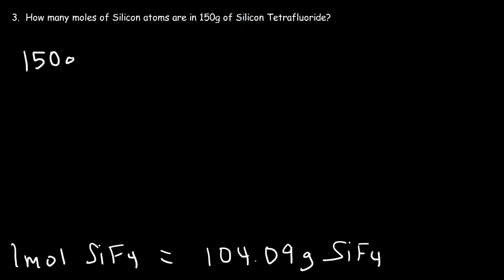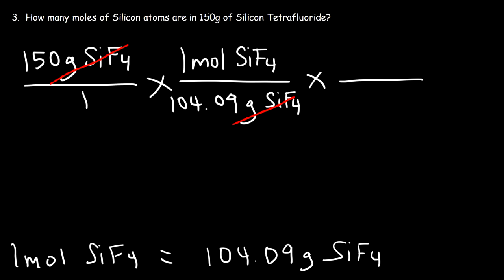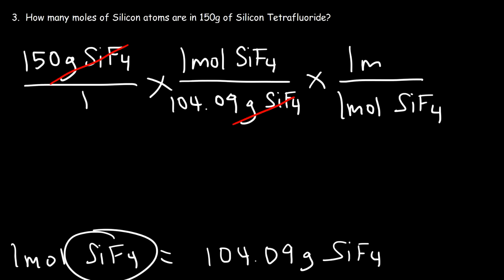Starting with 150 grams of silicon tetrafluoride, we need an extra conversion step to change the substance from silicon tetrafluoride to simply silicon. Converting to moles: one mole of SiF4 has a mass of 104.09 grams. There is one silicon atom per compound, so for every mole of silicon tetrafluoride there's one mole of silicon atoms — a one-to-one ratio. So it's 150 divided by 104.09, and the answer is 1.44 moles of silicon atoms.